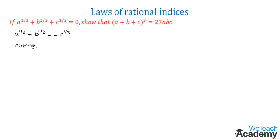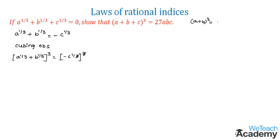Now let us cube both sides. We get a power 1 by 3 plus b power 1 by 3 whole cube is equal to minus c power 1 by 3 whole cube. On the right hand side, the cube and 1 by 3 cancel. On the left hand side, the expression is in the form of the formula a plus b whole cube equals a cube plus 3a squared b plus 3ab squared plus b cube.